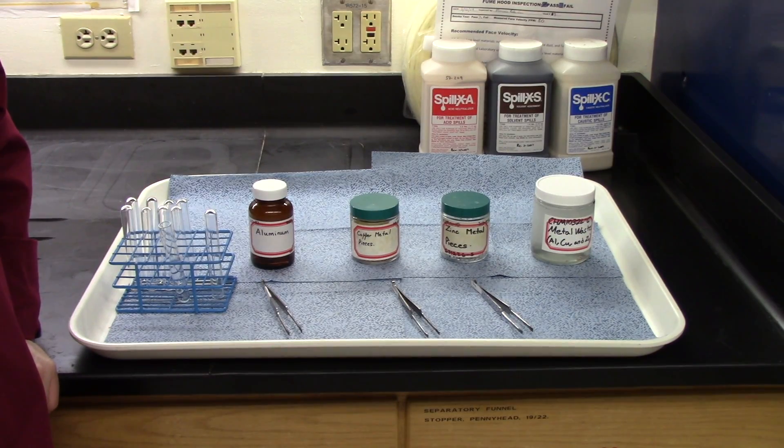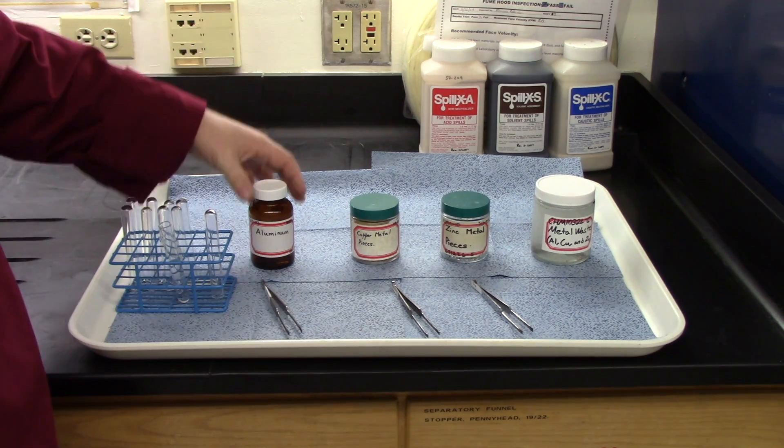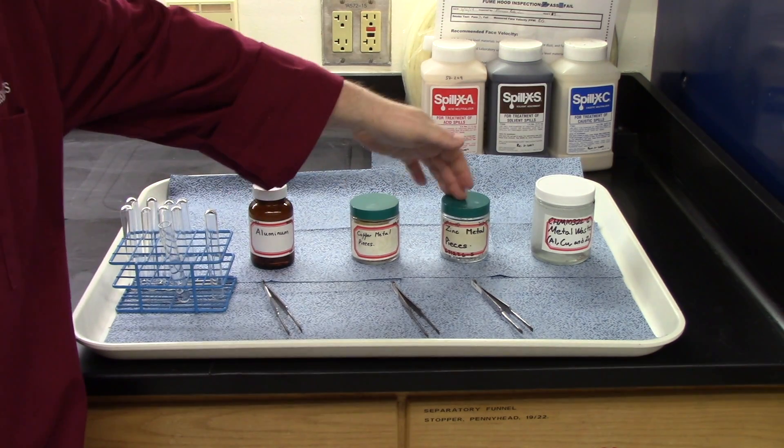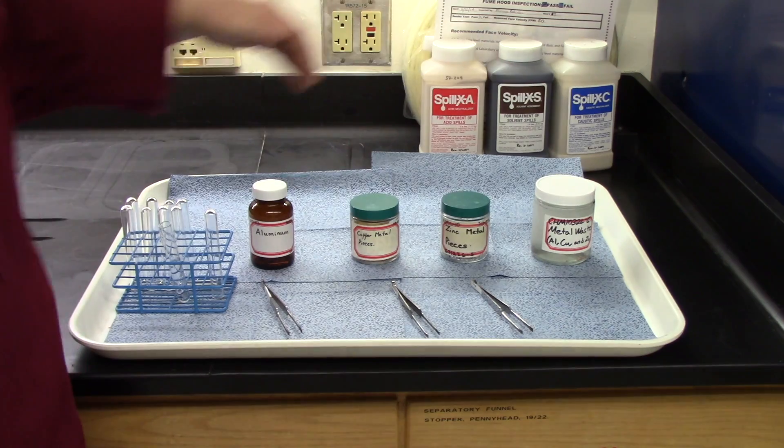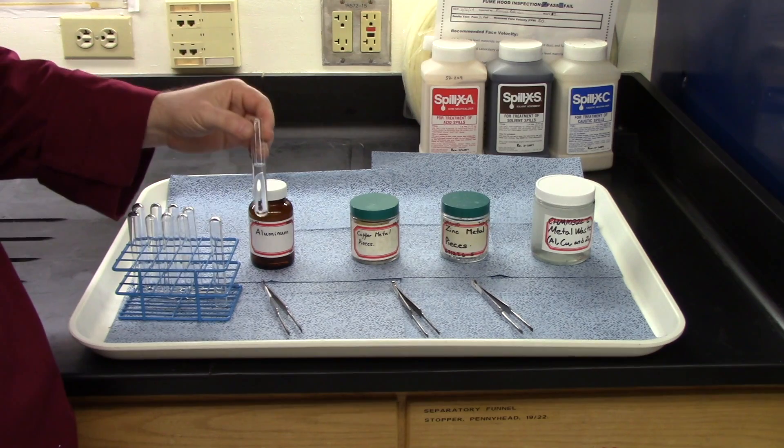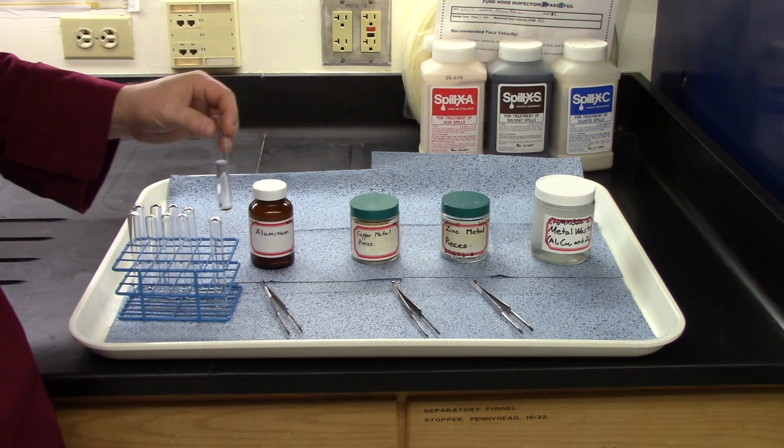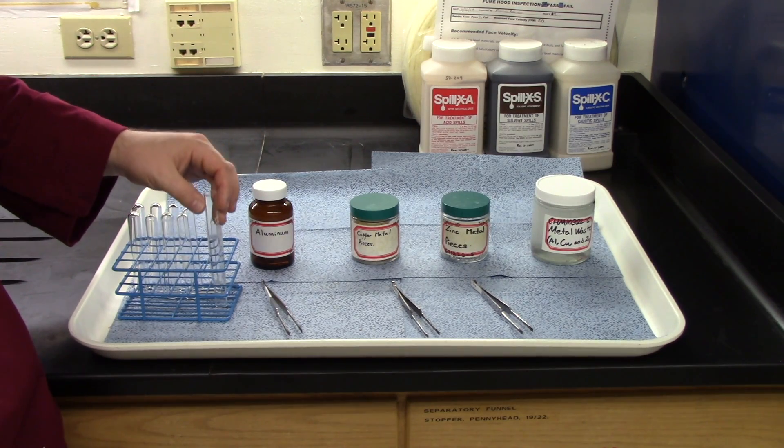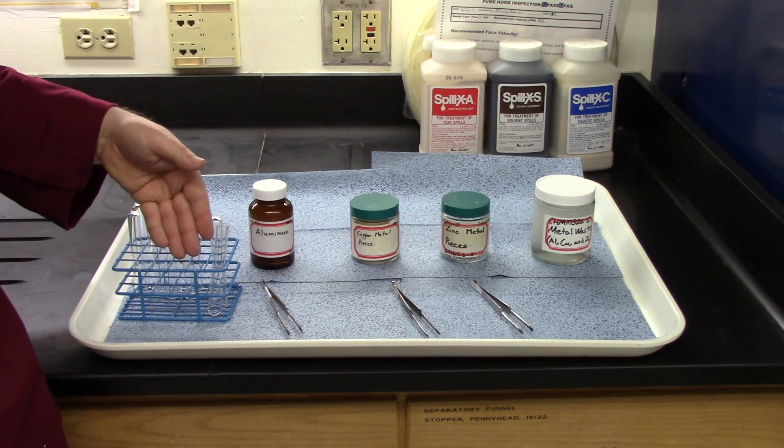This is the setup for part one of today's experiment. Here we have some aluminum, some copper, some zinc. And this is the waste bottle. I've taken my test tubes off of my bench. These are just empty test tubes. I put a little bit of acid in this one, because I want to react each metal with acid. So you want to have three test tubes with acid in them.